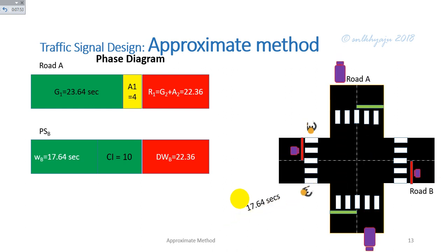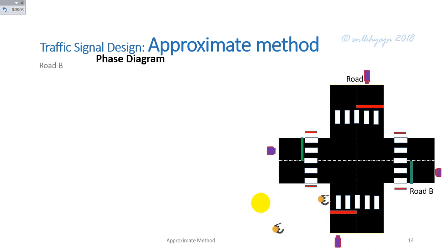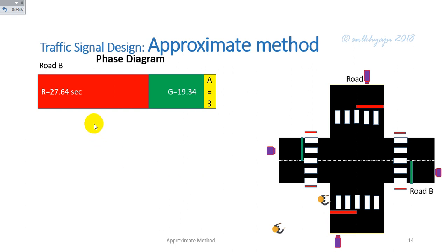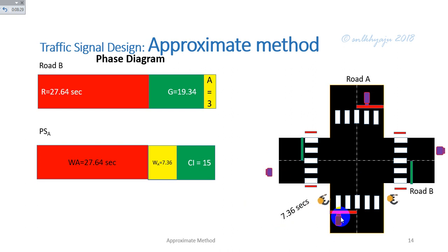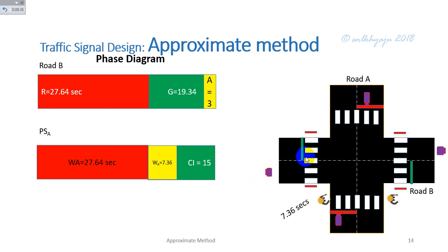This shows the traffic signal design with green timing for Road A and red timing for Road B. For Road B: the red time is 27.6 seconds, the green time is 19.36 seconds, and the amber time is 3 seconds. The red time for Road B is respectively equal to the walk period for Road A. The phase diagram shows the relationship between red and green timing for both Road A and Road B.